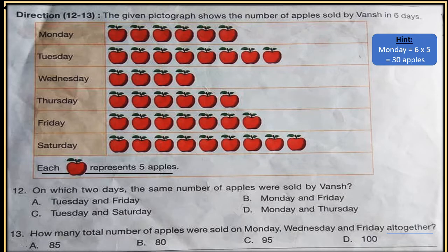Question number 12 to 13: The given pictograph shows the number of apples sold by someone in six days. Now see the pictograph. Each apple represents 5 apples. So first you calculate how many apples sold on Monday, Tuesday, Wednesday, Thursday, Friday, Saturday.